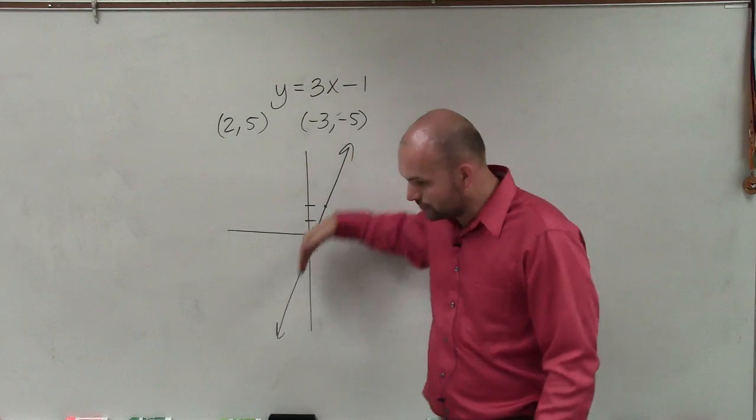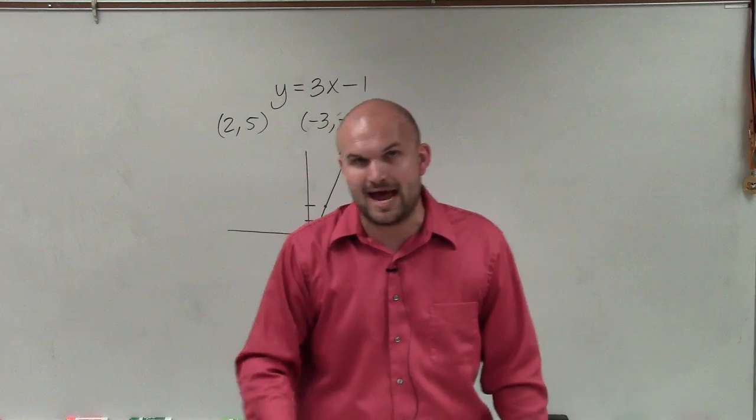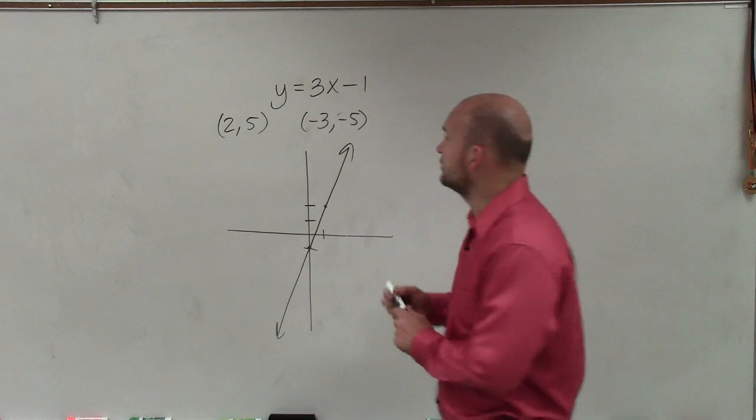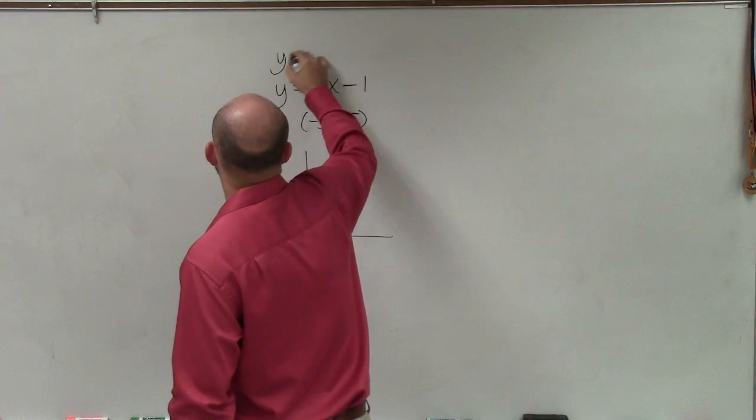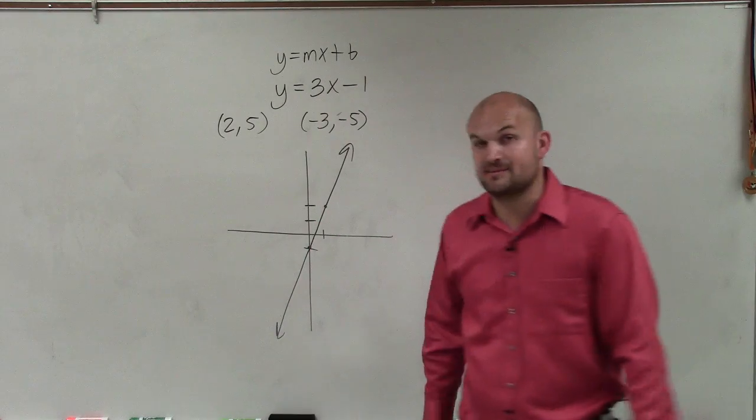And obviously, they're all going to fall on what we call a linear path, right? So the slope-intercept form of a linear equation is y equals mx plus b.